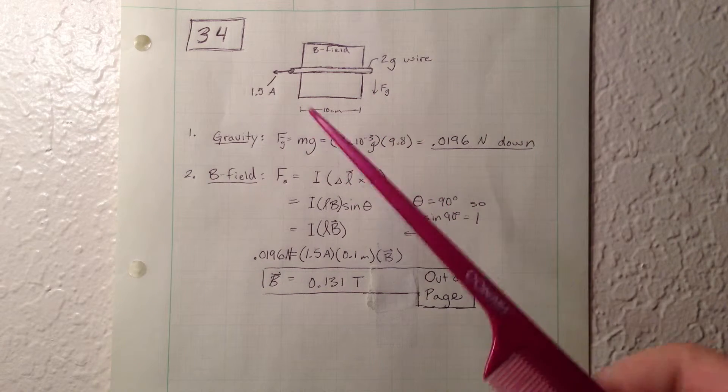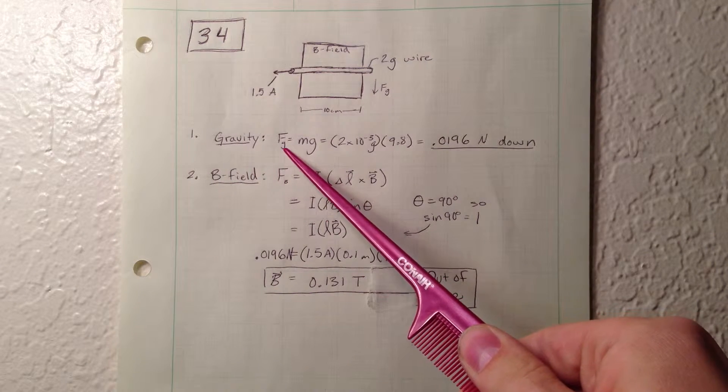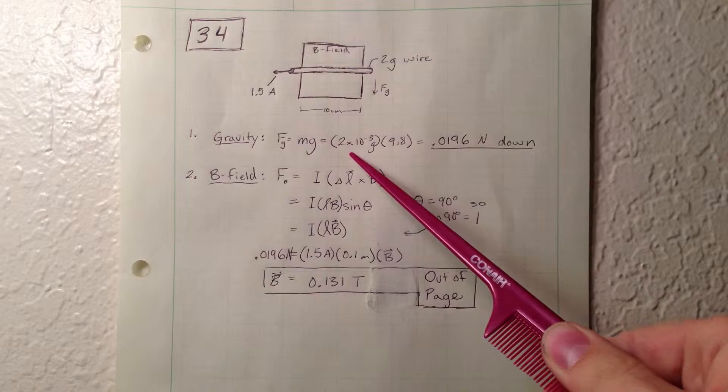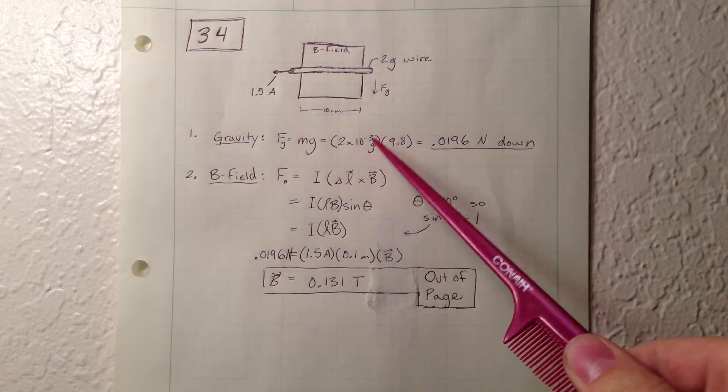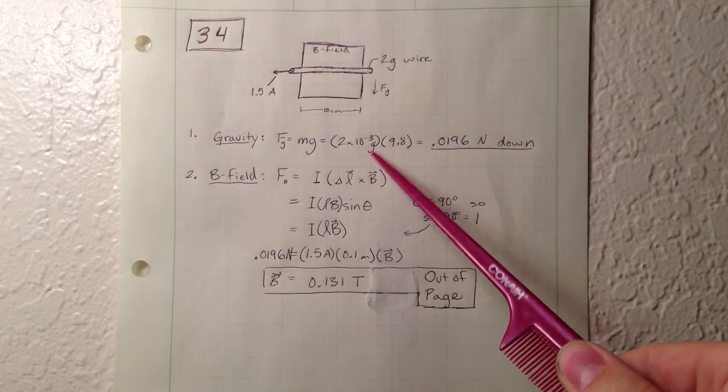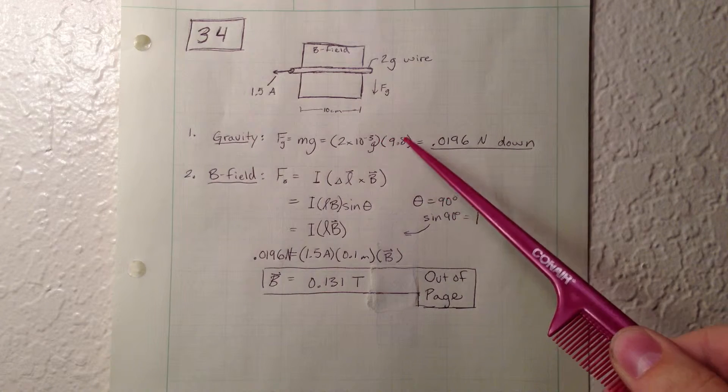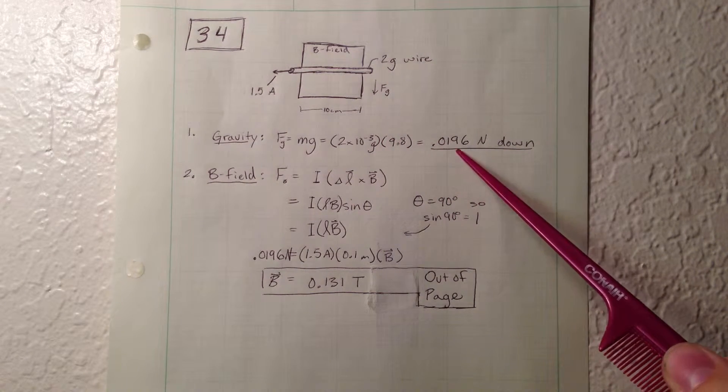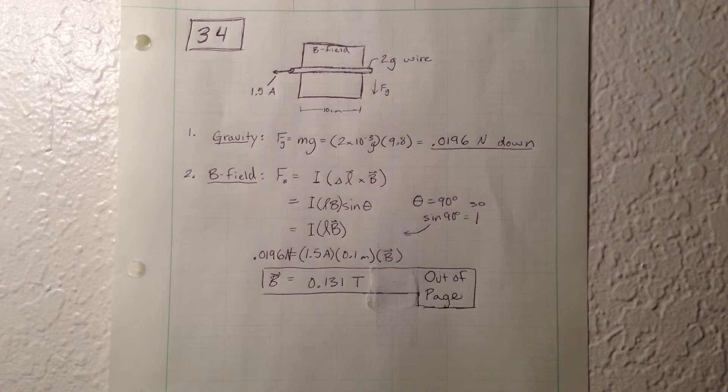So what I did first is I found the force of gravity right there. That's mass times gravity. 2 times 10 to the negative 3rd kilograms - I accidentally wrote a g, that should be kg - times 9.8. And that equals 0.0196 newtons in the downward direction.